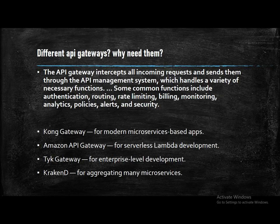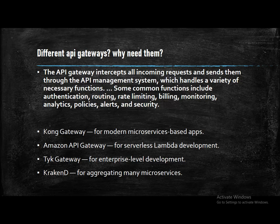On API gateways and why we need them: an API gateway intercepts all incoming requests and sends them to the API management system, handling authentication, routing, rate limiting, billing, monitoring, analytics, and security alerts. The top four API gateways are Kong Gateway, Amazon API Gateway, TYK Gateway, and KrakenD. In our application, we use Amazon API Gateway.